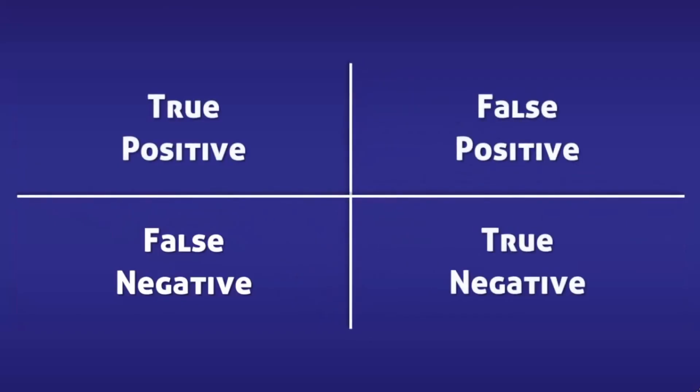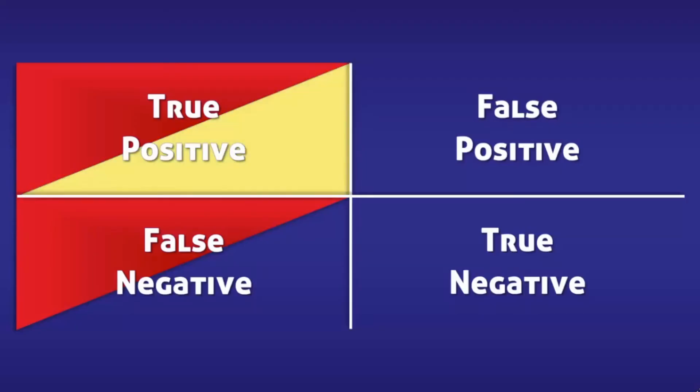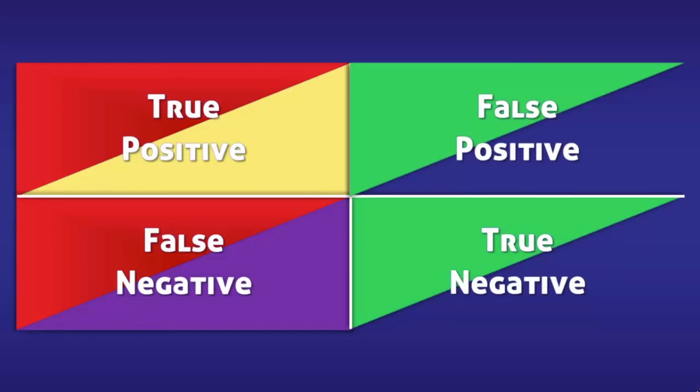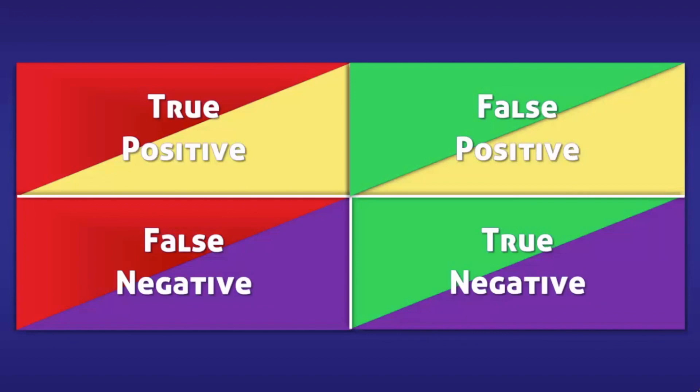So once more, both the true positives and false negatives have that condition, but with the true positives, the condition is correctly identified, and with the false negatives, the condition is incorrectly excluded. Both the false positives and true negatives do not have the condition, but with the true negatives, the condition is correctly excluded, whereas with the false positives, the condition is incorrectly identified.